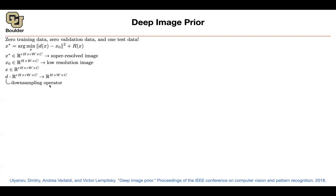You have some downsampling operator, which basically drops every R pixels in your image. So you have X, you drop every R pixels, and then you compare the outcome to X0 and solve that minimization problem. Without the regularizer R, X* is going to overfit to X0, and whatever comes out is not going to look like anything that is super-resolved. So the regularization matters.